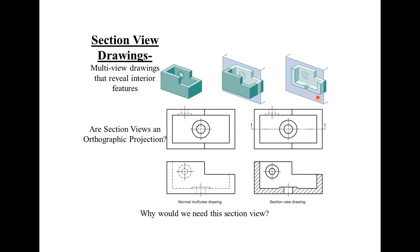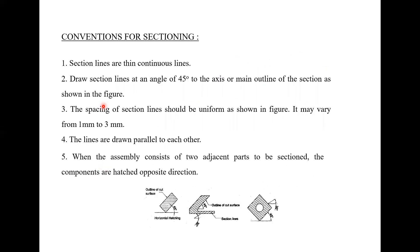Here we have the first angle projection. Now, convention for sectioning: the first convention is that section lines are thin continuous lines.